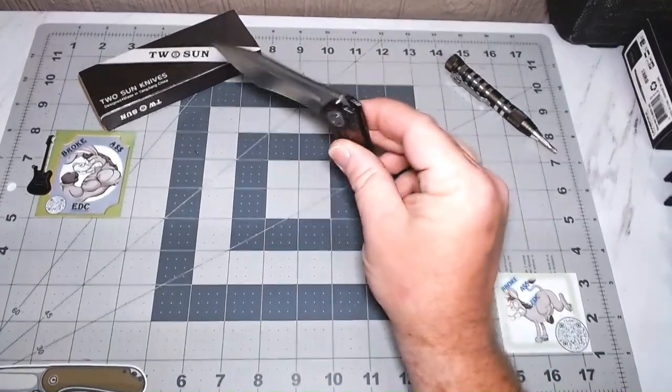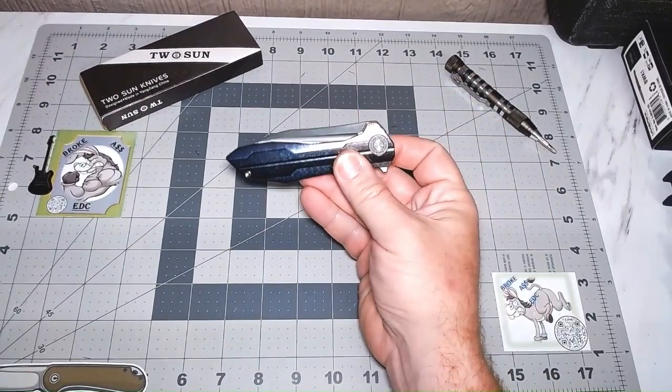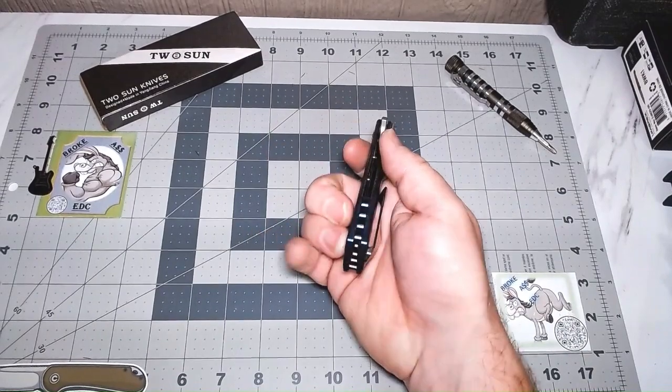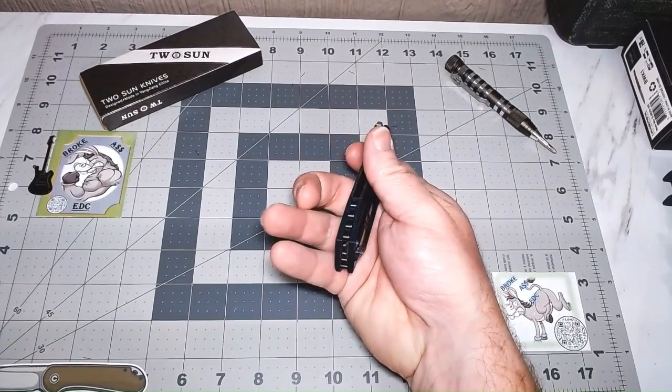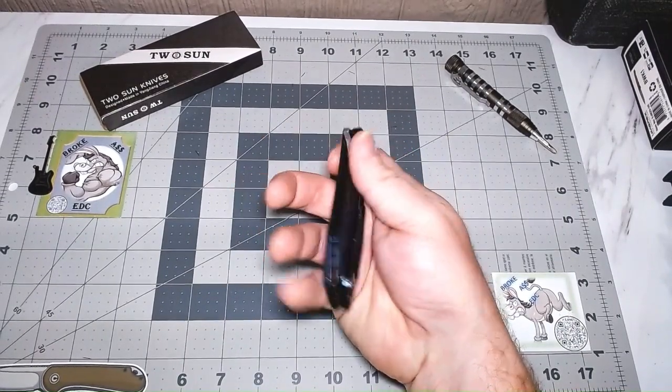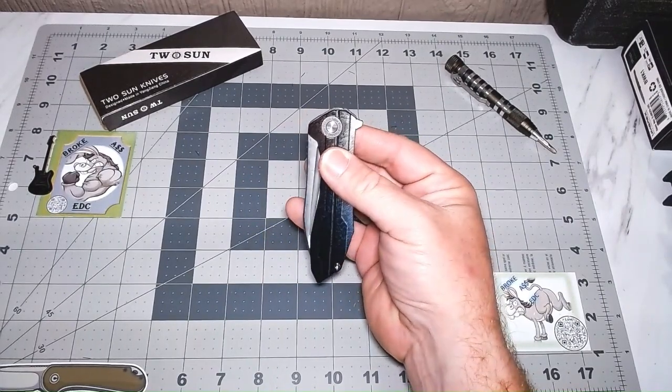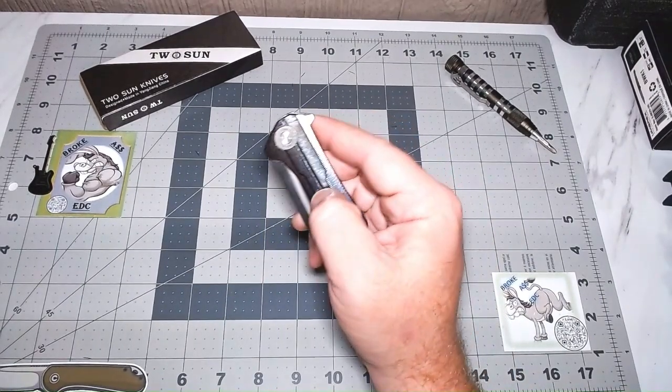But it's definitely, I've carried it and it's definitely a looker. People want to look at it. They like the anno. I do. The back spacer on it kind of sets it off. No lanyard hole. It would have been nice on this one. The lanyard would probably look good on it.